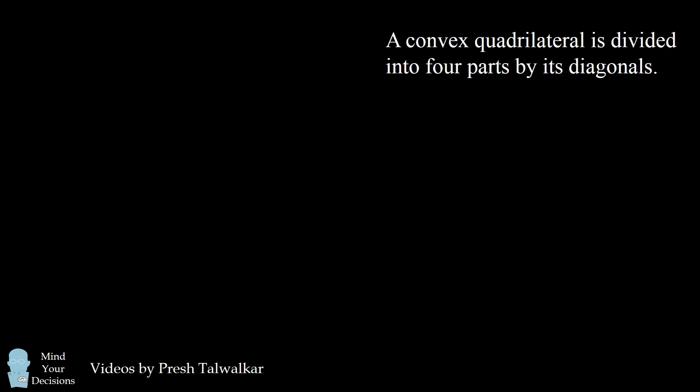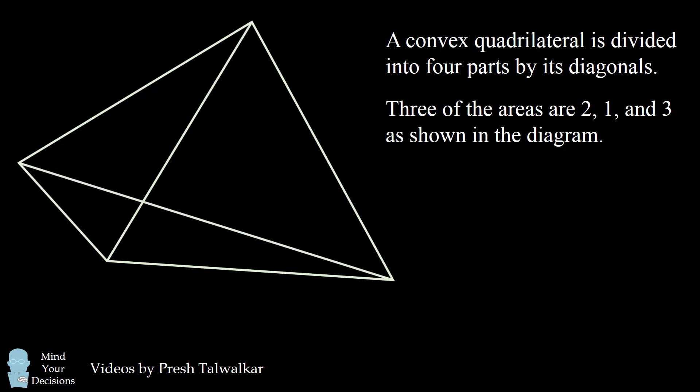Hey, this is Presh Talwalkar. A convex quadrilateral is divided into four parts by its diagonals. Three of the areas are 2, 1, and 3 as shown in the diagram. What is the area of the fourth region denoted by x?